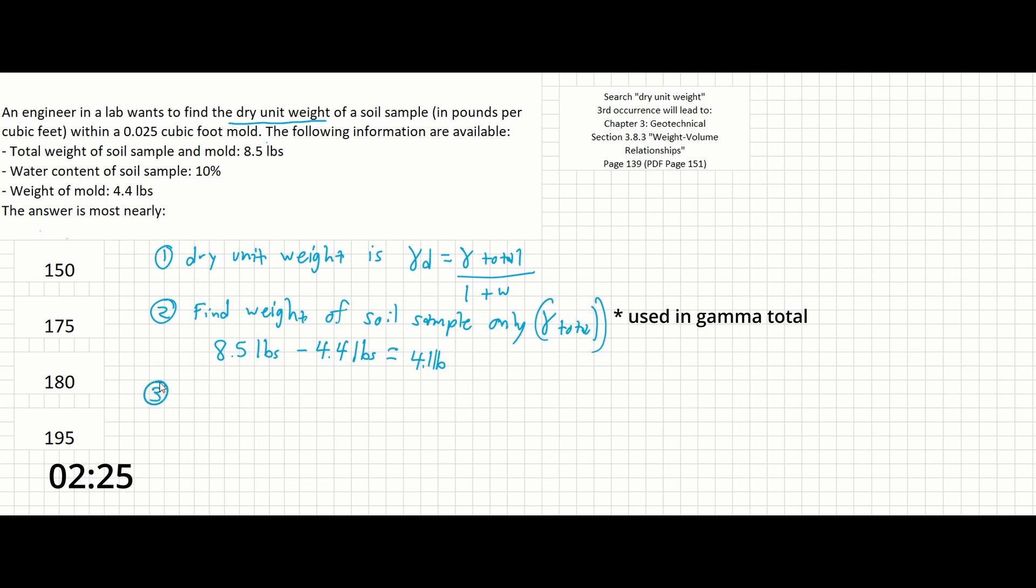That will enable us to find gamma total, which is going to be the weight of the whole sample divided by the size of the mold. So that's gamma equals w over v, which is going to be the weight of the solids plus the weight of the water, over the volume of solids plus the volume of water plus the volume of air.